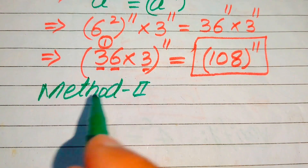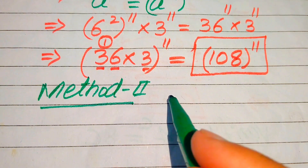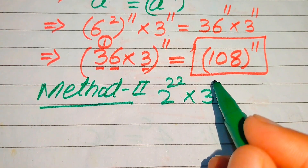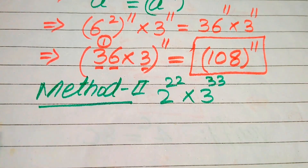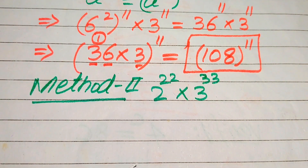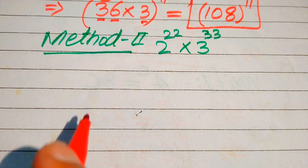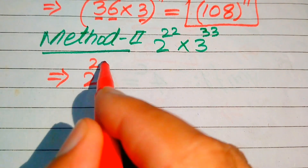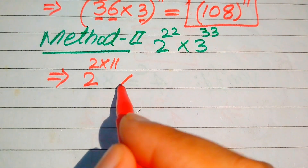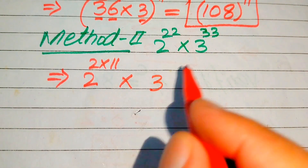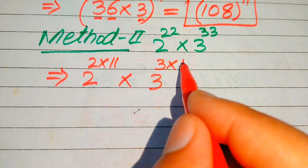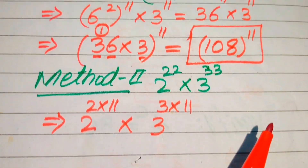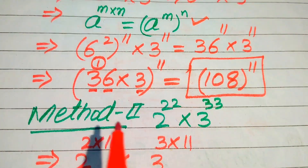In the second method we copy down the given expression: 2 to the power of 22 multiplied by 3 to the power of 33. We again break the exponents — 22 is written as 2 multiplied by 11, and 33 is written as 3 multiplied by 11 — giving 2 to the power of (2 times 11) multiplied by 3 to the power of (3 times 11). We again apply the same exponent law.